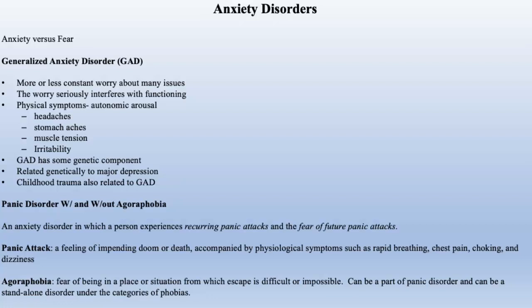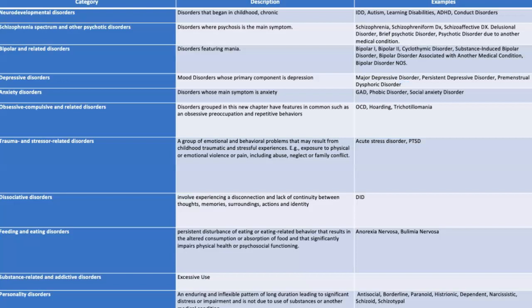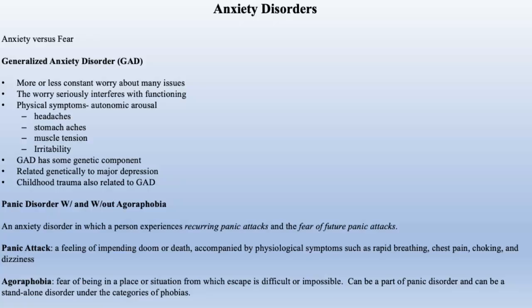Now we're going to talk about a few different categories of disorders — not all of them, and not all disorders within each category. This is just an introduction. First: anxiety disorders. These are disorders where the main symptom is anxiety. We're going to talk about generalized anxiety disorder and phobic disorder.